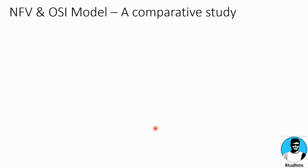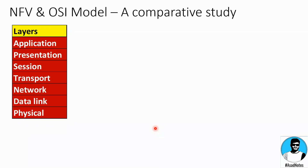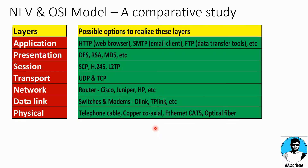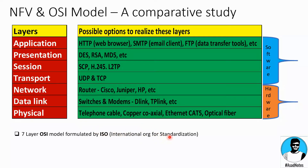Let's do a comparative study between NFV and OSI models. Whoever is watching this video is likely aware of the OSI model from college. The OSI model was a seven-layer conceptual framework for data communication between two machines. In this model, the bottom three layers mainly involved hardware and the top four layers mainly involved software and protocols. The organization which formulated this model was ISO, the International Organization for Standardization.